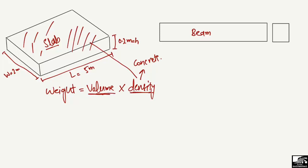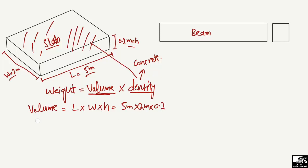We multiply volume and density to get the weight of the slab. Starting with the volume: the volume of the element can be found by multiplying length × width × height (or thickness). So, 5 meters × 2 meters × 0.2 meters gives us a volume of 2 cubic meters.